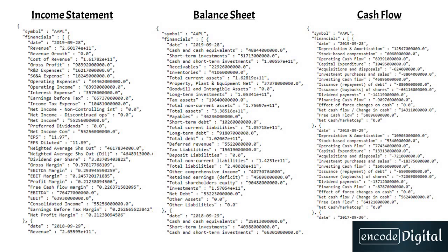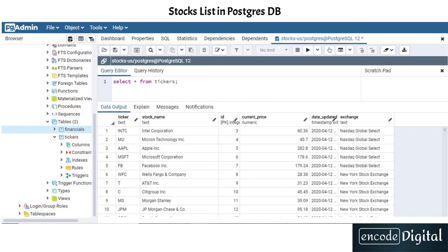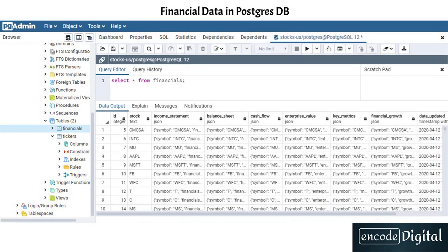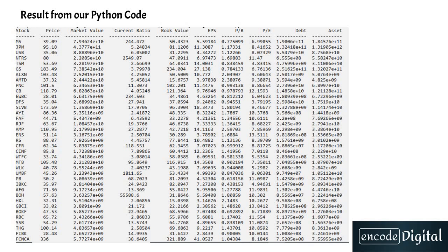We will create a PostgreSQL database, add all the tickers and current prices, then get all the financial data in JSON into our database: income statement data for the last 10 years, balance sheet, cash flow, enterprise values, key metrics, PB ratio, PE ratio, and financial growth. Then we'll write a program in Python based on our criteria to get a list of screened stocks — something like this, which we will deep dive into in coming lectures — and we're going to write each and every piece of code ourselves.